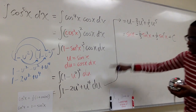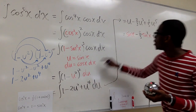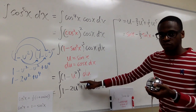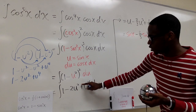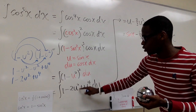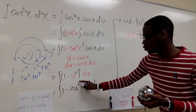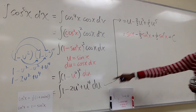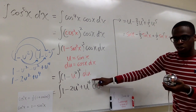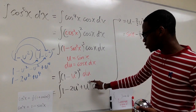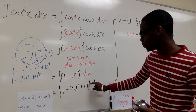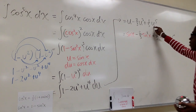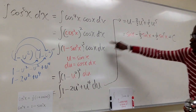We then take the integral of each term. The integral of 1 is u. The integral of negative 2u squared is negative 2 over 3 times u cubed — applying the reverse power rule, we add 1 to the exponent and divide by the new exponent: 2 plus 1 = 3. The integral of u to the fourth: adding 1 gives 5, so we divide by 5, yielding u to the fifth over 5.